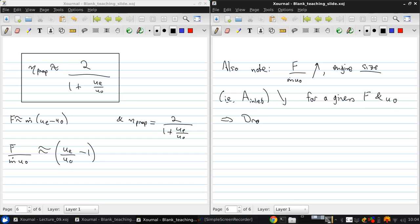So this means that the drag due to the engine nacelle, the outer casing of the engine, goes down because the skin friction drag on the nacelle is basically proportional to the nacelle surface area.